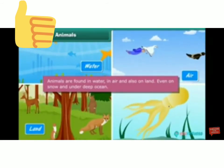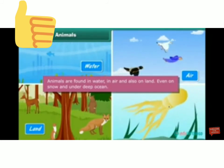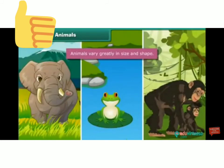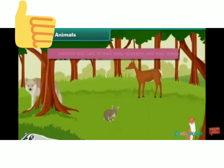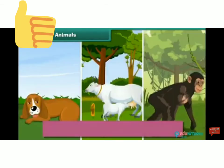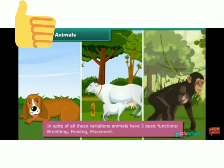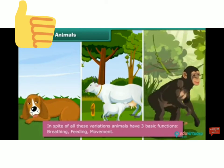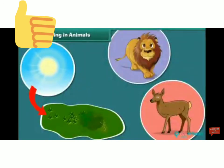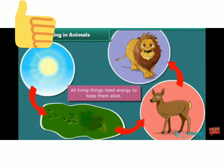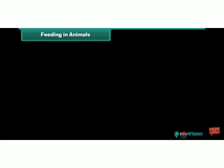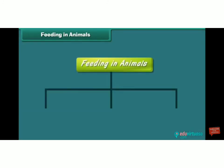We have seen that different animals live in water, air, land and even in snowy areas and deep oceans. Animals vary greatly in size and shape, and also vary in their body structure and habitat. In spite of all these variations, animals have three basic functions: breathing, feeding and movement. Animals need energy, and all living things need energy to keep them alive — they get energy from each other.